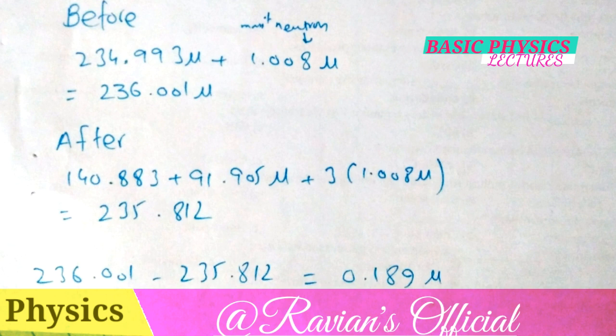After the compound nucleus breaks up into barium, krypton, and 3 neutrons, we have 140.883 amu of barium plus 91.901 amu of krypton plus 3 times 1.008 amu of neutrons, giving us 235.812 amu. The difference between them gives us 0.189 amu. So where does this mass go? This mass is converted into energy, which is utilized in nuclear reactors.